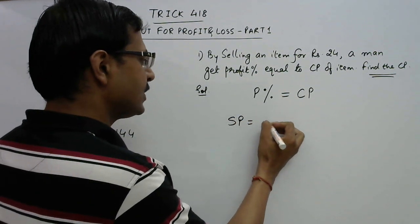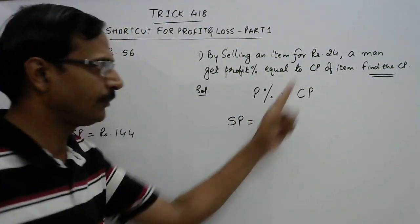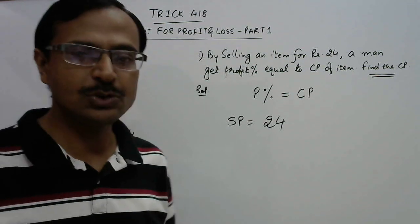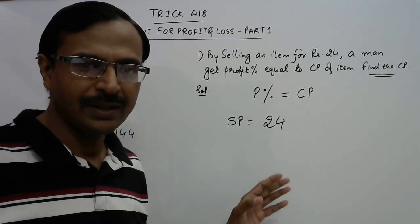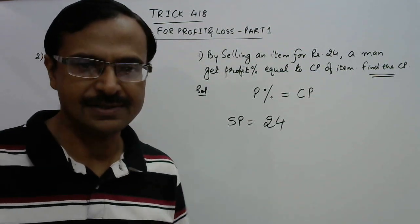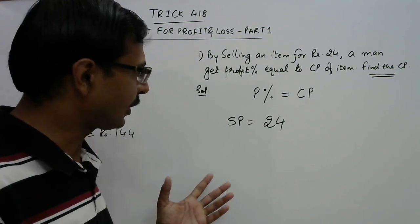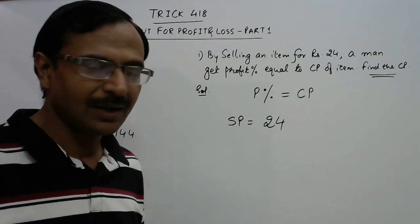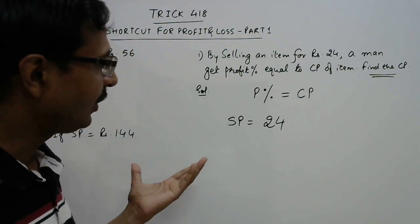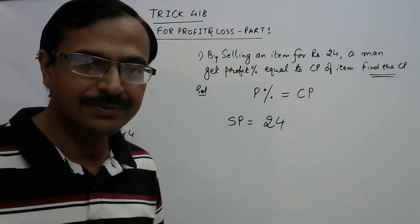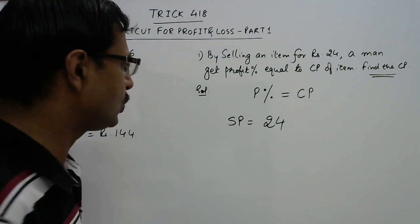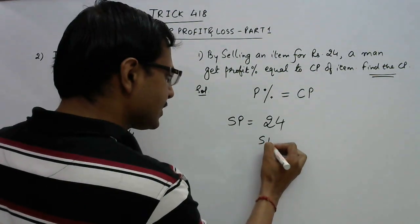See, the selling price given here is rupees 24, so we just need to look at this number 24 and we will have our answer. Traditional method you will be using the formula for selling price and then obviously there will be long calculation, but what you need to do here we are going to use this shortcut.